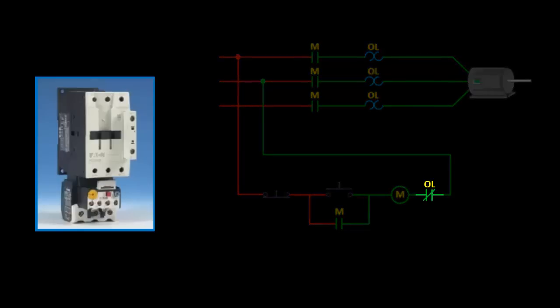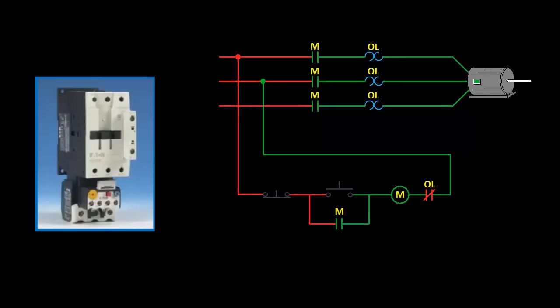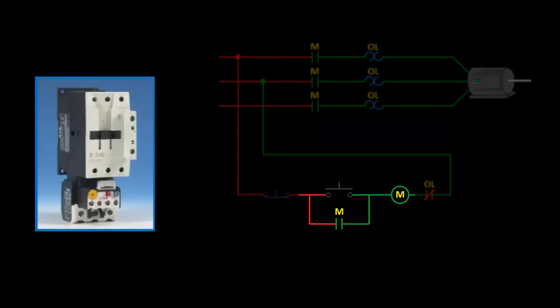In automatic reset, the contact will reset itself after a period of time after the trip, but in three-wire control, the motor will still have to be manually restarted as the starter coil remains de-energized.